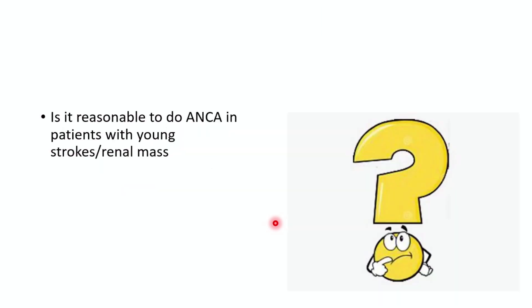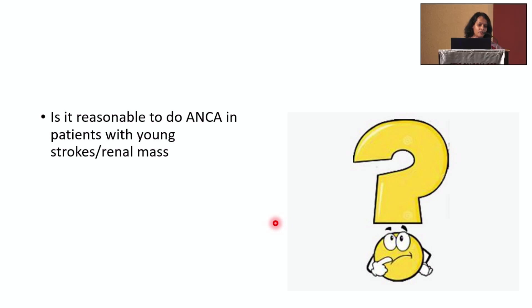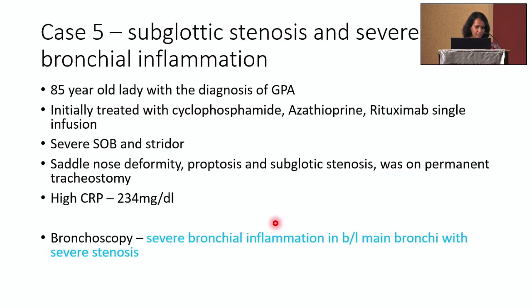Is it reasonable to do ANCA in patients with young stroke or renal mass? In a country like ours, for young stroke alone, I think it is no — it's not a luxury we can afford. But if there are other features suggesting GPA — like no other vascular risk factors, very high inflammatory markers, or other relevant findings — then I would say yes. This is my last case.